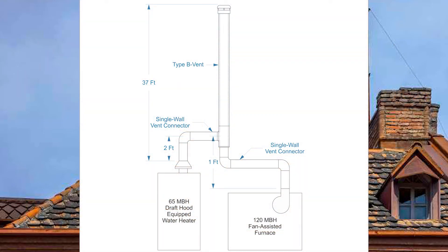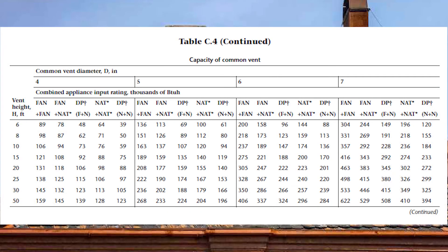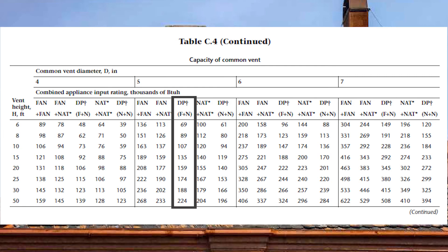Now let's size the common vent. Total BTU load is 120 MBH plus 65 MBH equals 185 MBH. Even though vent height is 37 feet and falls between table values, looking at a 4-inch common vent under DPF plus N: at 30 foot it's only good to 123 and at 50 foot only to 139, so 4 inch won't work. Moving to 5 inch: at 30 foot it's good to 188 and at 50 foot to 224 — that means no interpolation is needed at all. The common vent will be 5 inch.